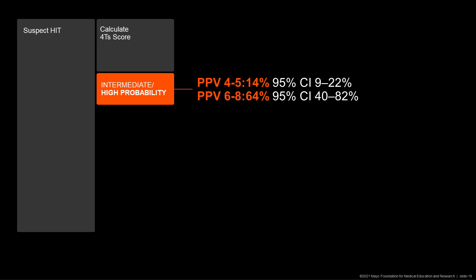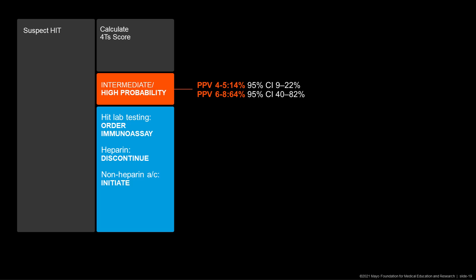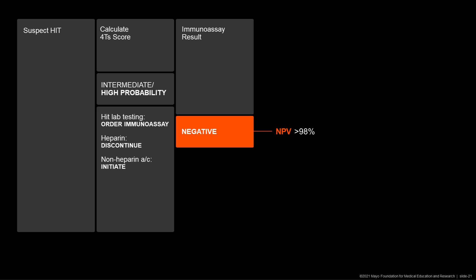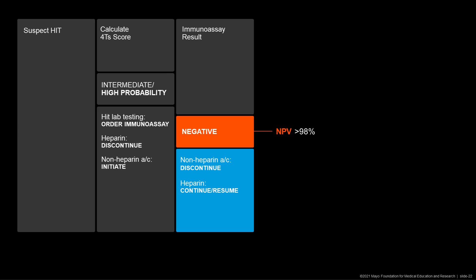Since a non-low probability 4T score — also known as moderate or high probability — does not have a very high positive predictive value, heparin-induced thrombocytopenia testing should be ordered. The most commonly available and widely ordered assay is an immunoassay. Pending results of testing, heparin should be discontinued and a non-heparin anticoagulant such as a direct thrombin inhibitor should be initiated. Once the immunoassay result is available and is negative, this provides a very high negative predictive value for HIT, and the non-heparin anticoagulant can be discontinued and heparin can be continued or resumed.